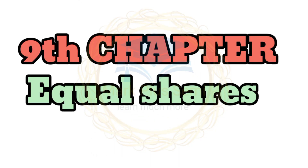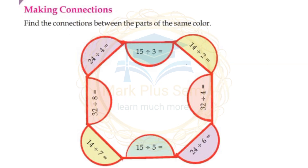Ninth Chapter: Equal Shares. Making Connections — find the connections within the parts of the same color.